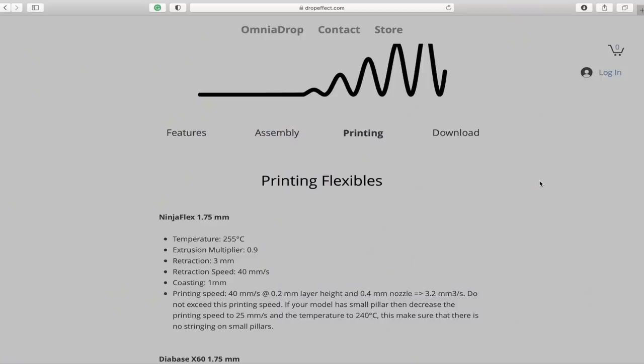Omnia Drop does have recommended settings for Ninja Flex and Diabase X60 so if you do plan on printing with either of those filaments then I would recommend copying the settings that they have on their website into your slicer and at least using that as a starting point. For me I hopped over to Cura and I opened up one of the generic TPU profiles that comes baked in and I just swapped out the settings with the ones provided by Omnia Drop.